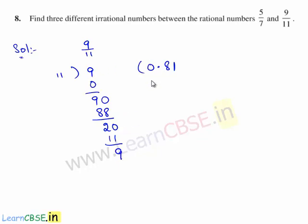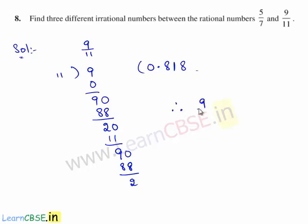From here the remainders repeat themselves. That is, because of the decimal point, 9 becomes 90, and 11 goes into 90 again 8 times. 11 times 8 is 88. Again we are left with 2 as the remainder, and so on. Therefore, the decimal expansion of 9 by 11 is equal to 0.81 bar.